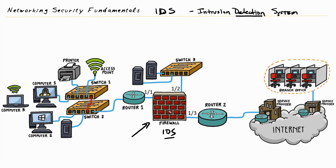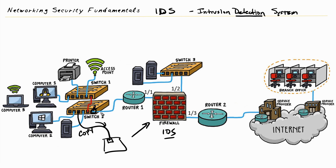Another option, if we don't want to have it inline with the traffic, is to use another device — virtual or physical — that supports identifying malicious traffic. We copy the traffic on the network to this device, maybe all the traffic for a VLAN or all traffic coming in and out of a router interface. The IDS device then analyzes that traffic and sends off alarms indicating it found something.